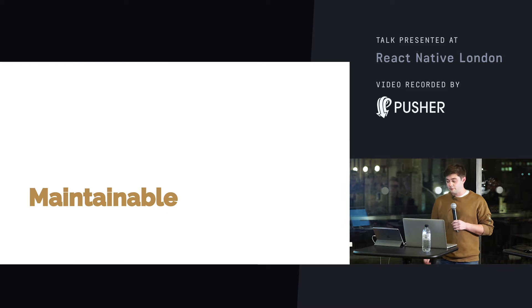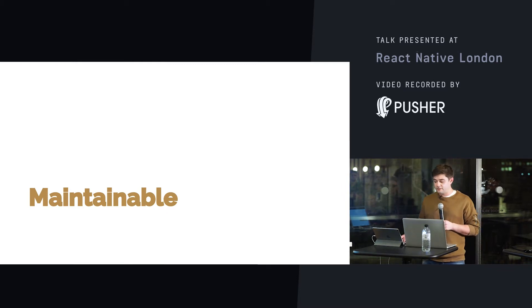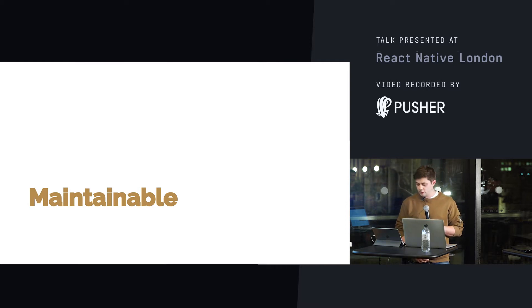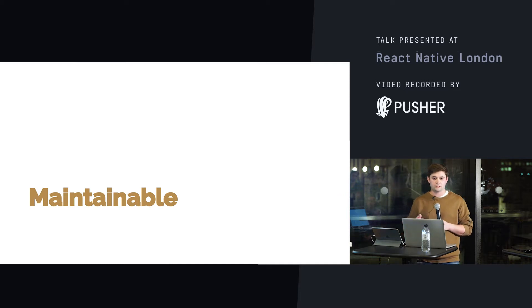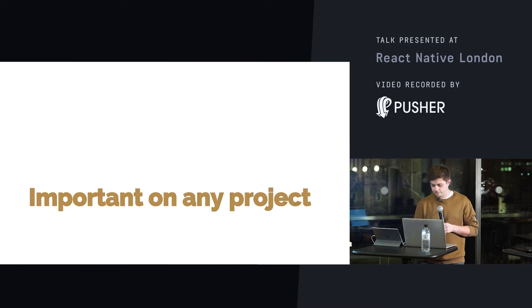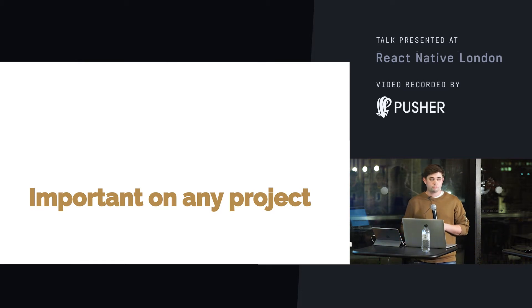The last tenet is making the project as a whole maintainable. Part of this is having the right tools set up and having the project be well tested so it's easy to check for regressions. This means you can move faster when making changes and worry a lot less about breaking something or having to manually go back and test. This is important for any project and is one of the key indicators for success.